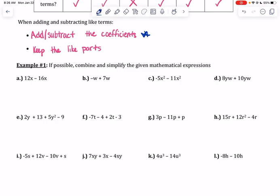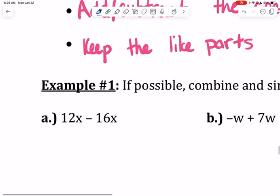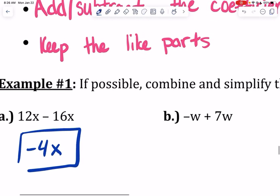Let's just go through these here. So these are both x terms, so 12 minus 16 is negative 4, keep the x. When you don't see a physical coefficient in the front of a variable, remember that it is a 1, not 0. If it were a 0 it wouldn't be there at all. So negative 1 plus 7 is 6w.